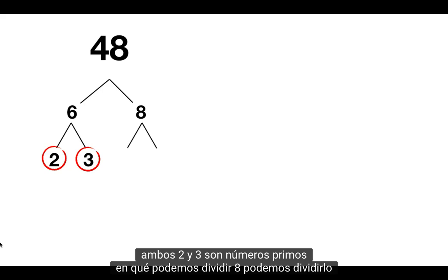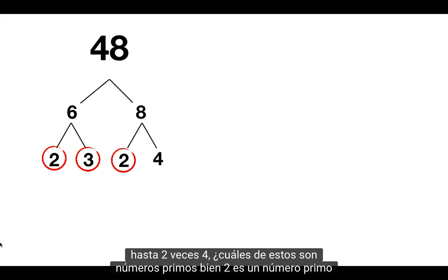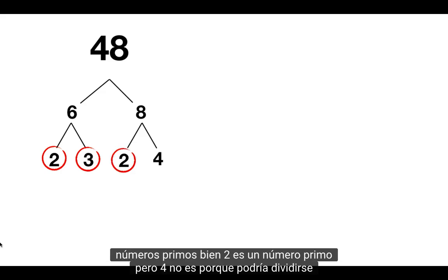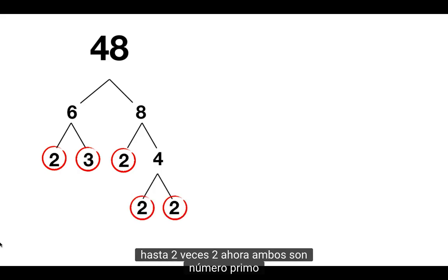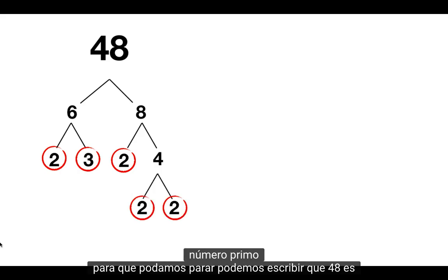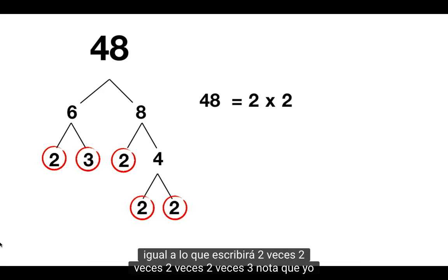What can we split 8 into? We can split 8 up into 2 times 4. Which of these are prime numbers? Well, 2 is a prime number, but 4 is not, because it could be split up into 2 times 2. Now both of these are prime numbers, so we can stop. We can write that 48 is equal to 2 times 2 times 2 times 2 times 3.